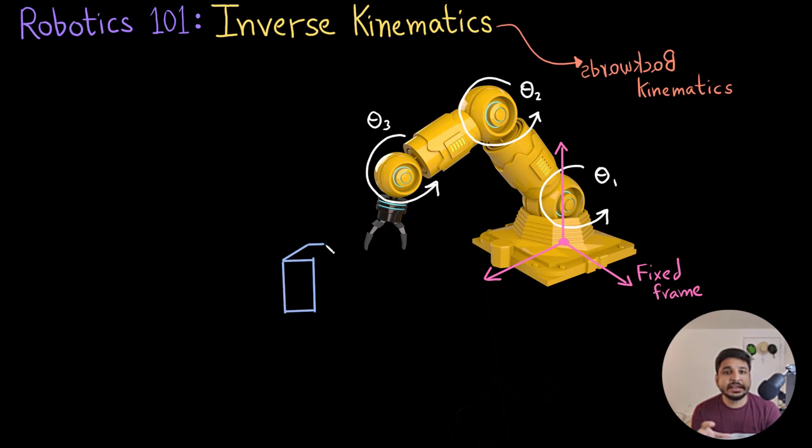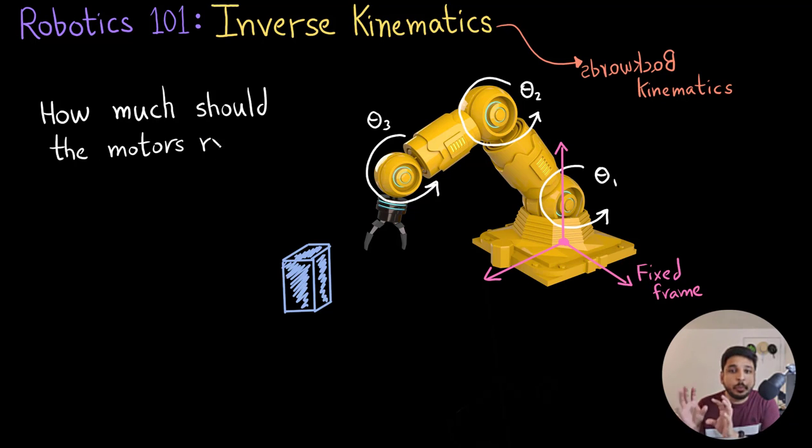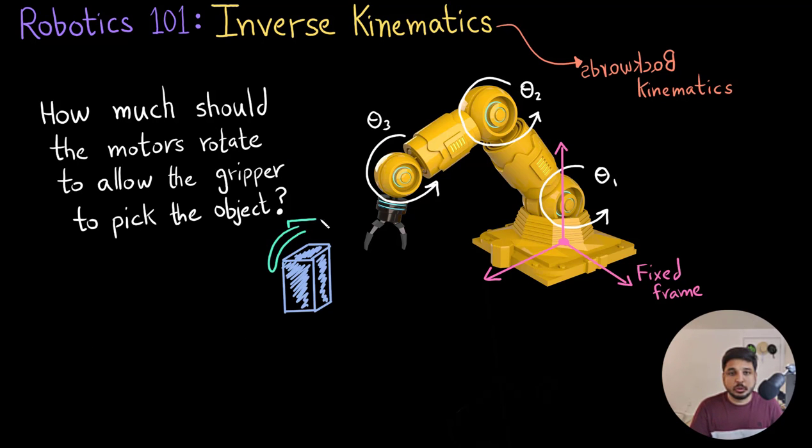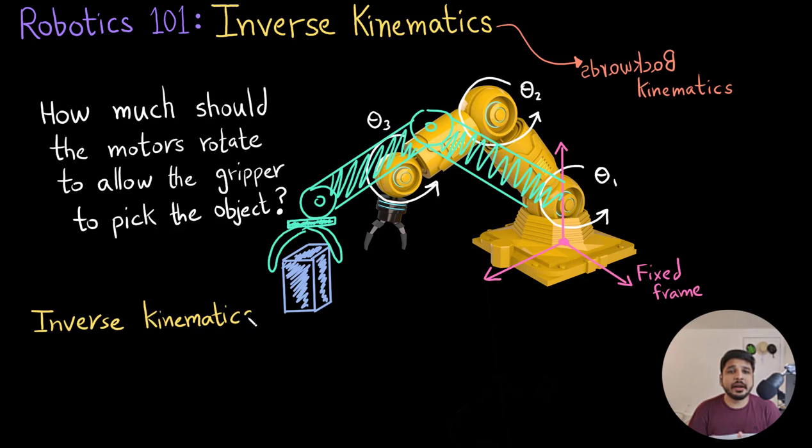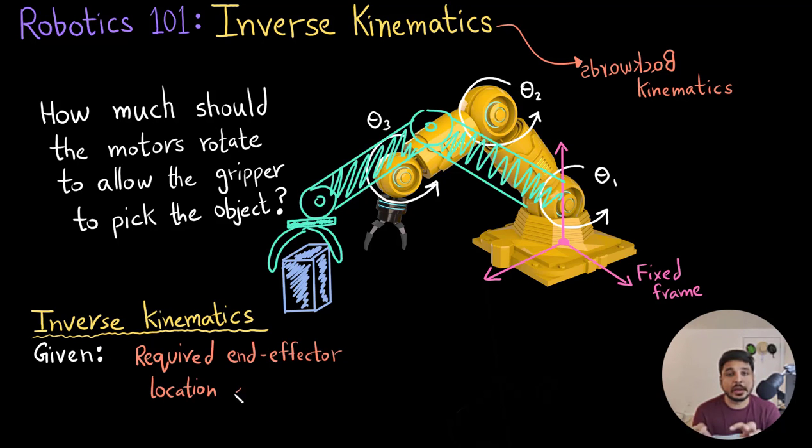And there is an object that this robot needs to pick. So the question is how much should the motors rotate in order to bring the gripper to grab the object. This is the position that I want the gripper to be at. So inverse kinematics is just that you are given the required end effector location and orientation, which is this one.